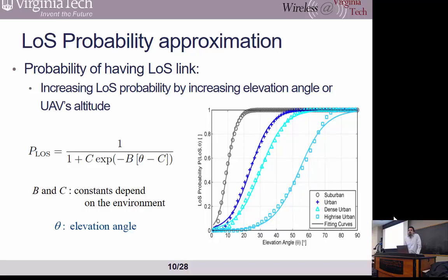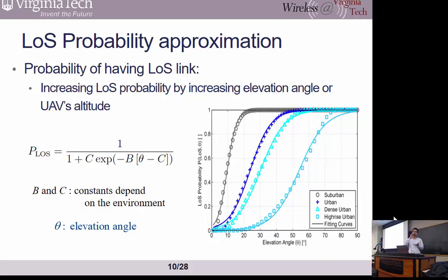Another question was whether the constants C and B are derived from empirical simulations or theoretical modeling. The speaker explained that they were found by ray tracing simulations: buildings are modeled with heights following a Rayleigh distribution, they generate buildings with environment-dependent density and height, perform ray tracing, and then do curve fitting. This is just a good approximation that captures the impact of both environment and altitude/location.